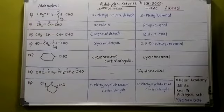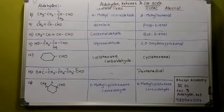Now, if you have a structure like this, crotonaldehyde is the common name. The IUPAC name is but-2-en-al. No need to write 1-al, so you can say it is but-2-en-al.